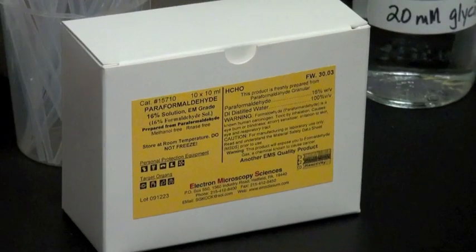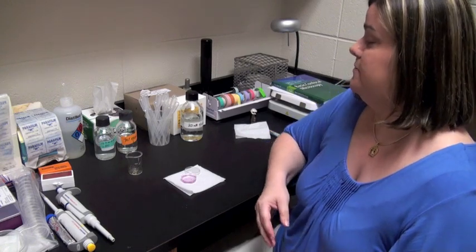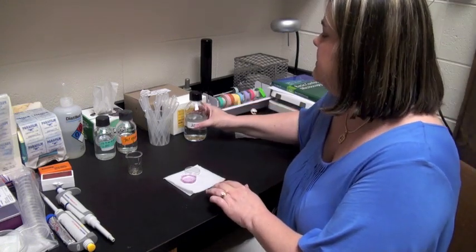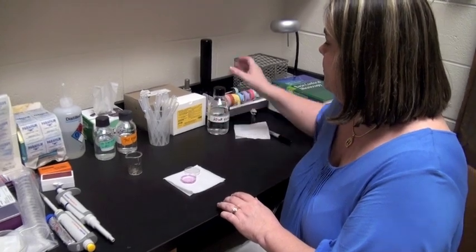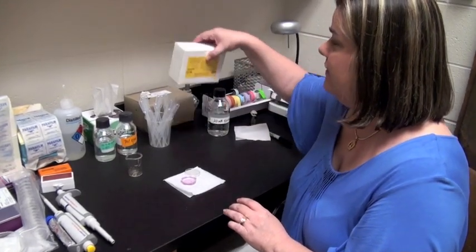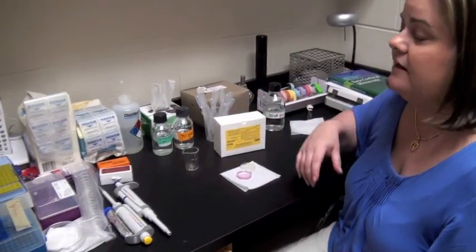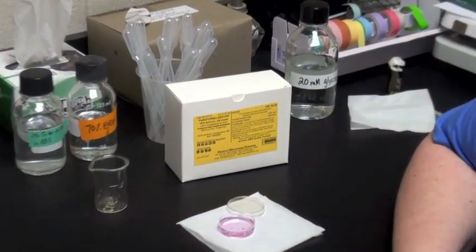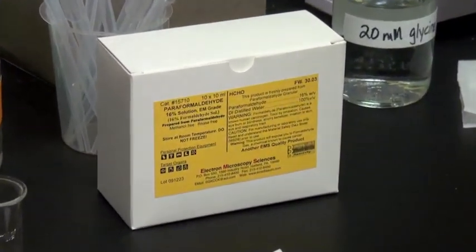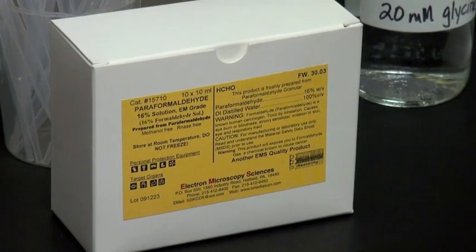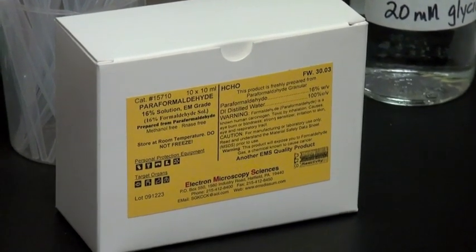To fix your cells, paraformaldehyde can be made from powdered formaldehyde or it can be made from an already prepared high percent solution such as a 16% solution, as long as it is supplied in capsules such as this which contains it within an inert environment.